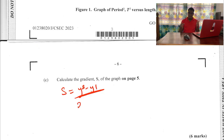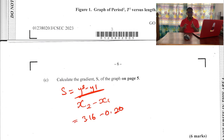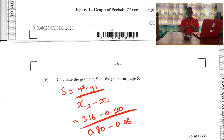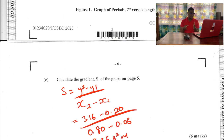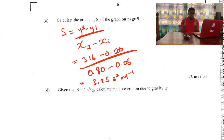Question C: calculate the gradient S of the graph on page 5. In order to calculate our gradient, we need to determine our coordinate pairs and use the formula (y₂ - y₁) / (x₂ - x₁) to calculate it.